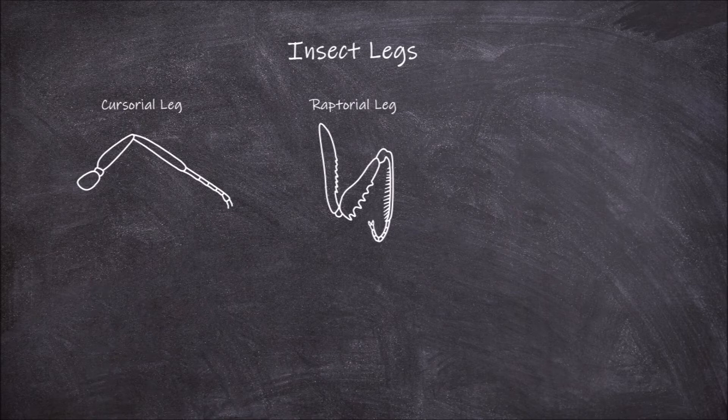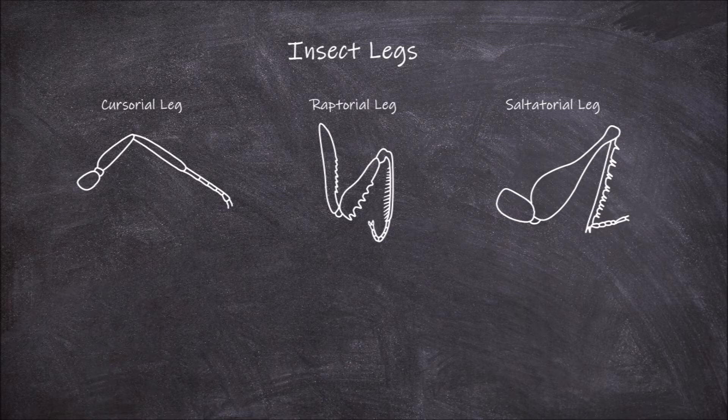The next type of leg are saltatorial legs. These legs have elongated femurs and tibias and are specialized for jumping. This type of leg is observed in grasshoppers.